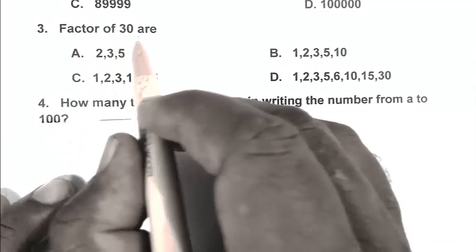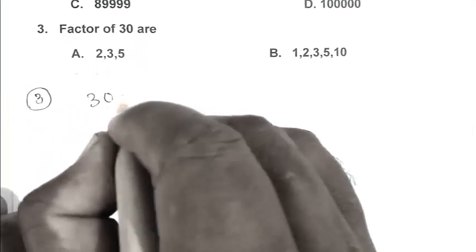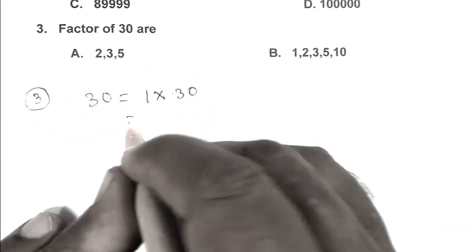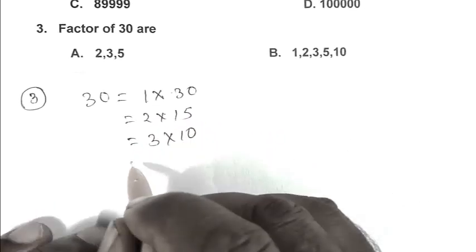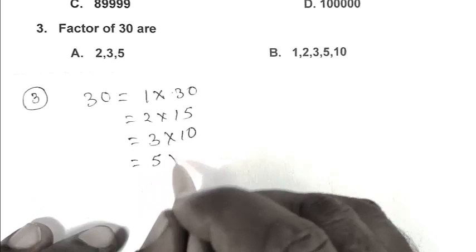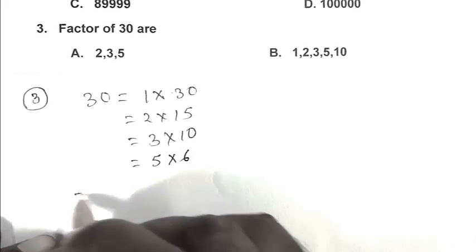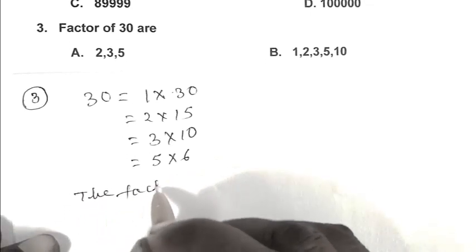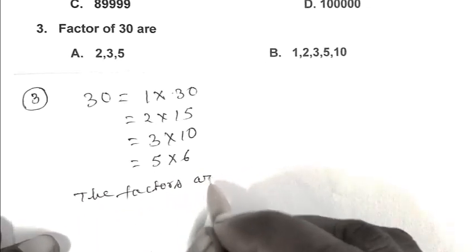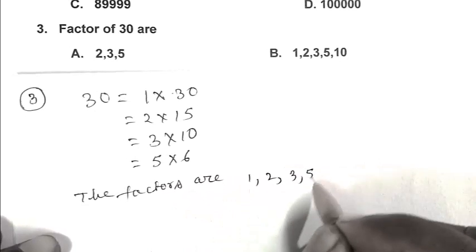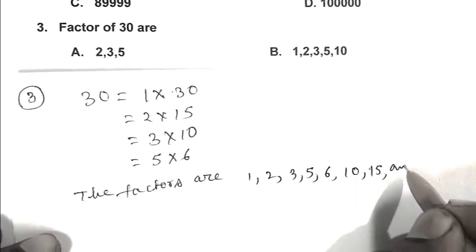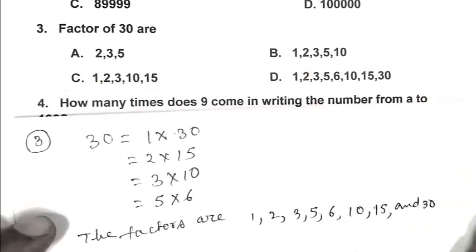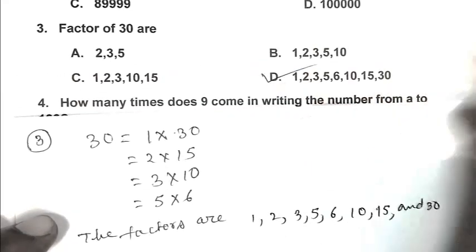Question number 3. Factors of 30 are calculated as 1 times 30, 2 times 15, 3 times 10, 5 times 6. The factors are 1, 2, 3, 5, 6, 10, 15, and 30. So D is the right answer.